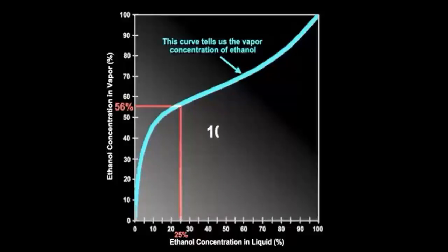The water concentration is just the difference between the ethanol concentration and 100%, since the two concentrations must add up to 100%. So the concentration of the water in the vapor is 44%.